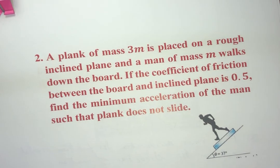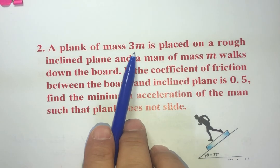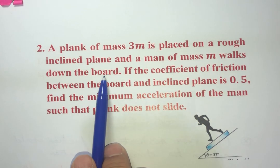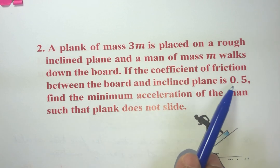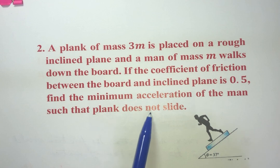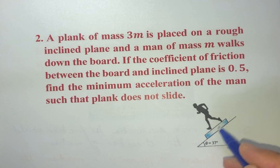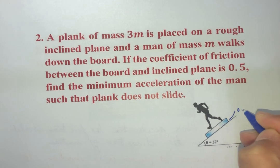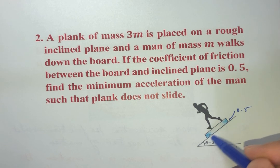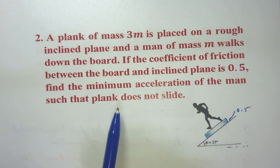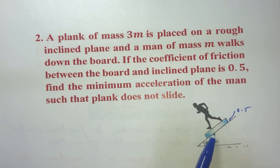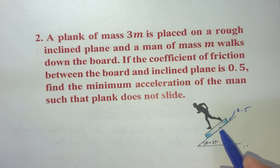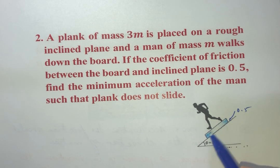The second question: a plank of mass 3m is placed on a rough inclined plane and a man of mass m walks down the board. The coefficient of friction between the board and inclined plane is 0.5. Find the minimum acceleration of the man such that the plank does not slide. The friction of interest is only between the plank and the inclined plane — not between the man and the plank — so we consider the man and plank as one system.